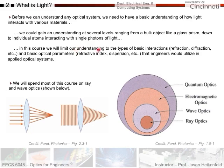In this course, we're going to limit our understanding to the types of basic interactions - refraction, diffraction, et cetera - and basic optical parameters like refractive index and dispersion that engineers would utilize in applied optical systems. If I can get you to master these and really understand them down to a materials basis, then you're completely solid for doing optical engineering in the future.